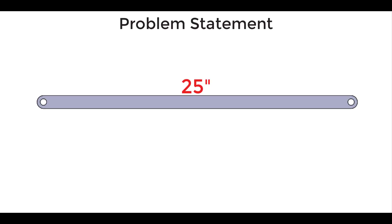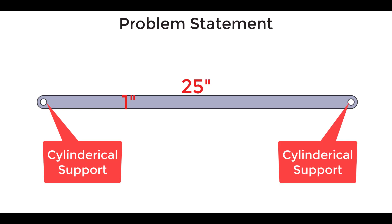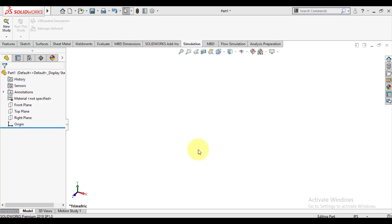We have a bar of length 25 inch and height 1 inch. The bar is cylindrically supported at both ends. Bar thickness is 0.5 inch and it is made of steel. So let's start our simulation now.